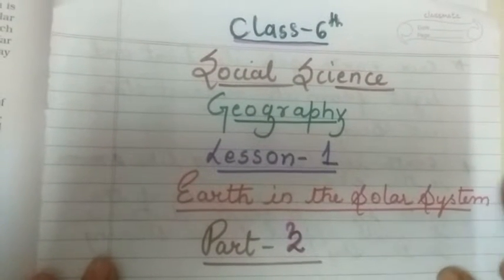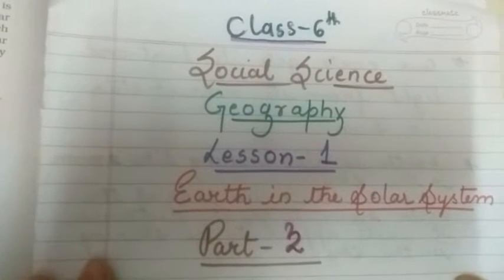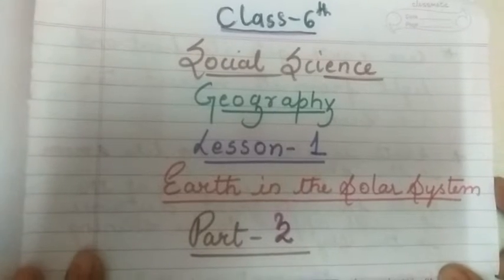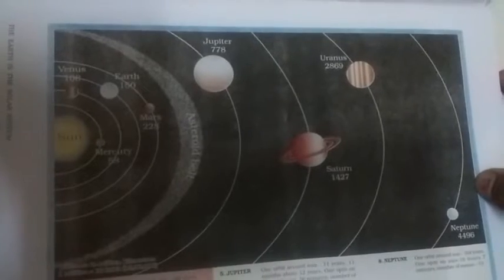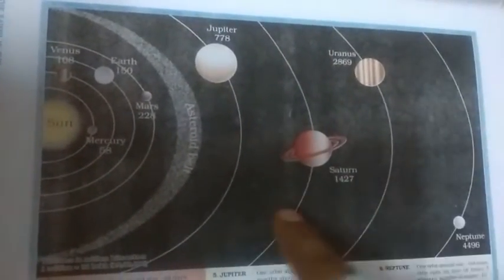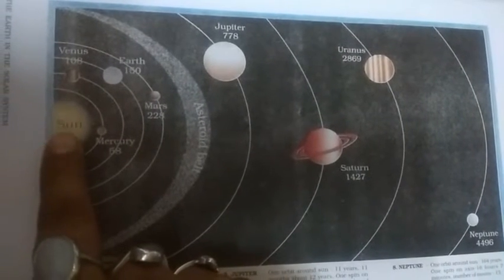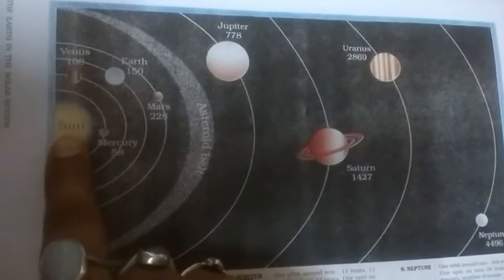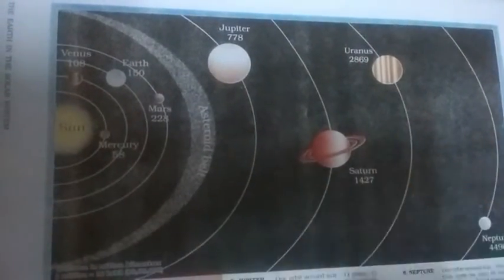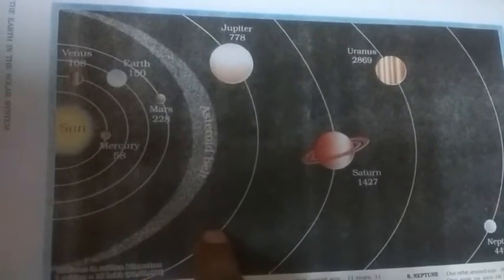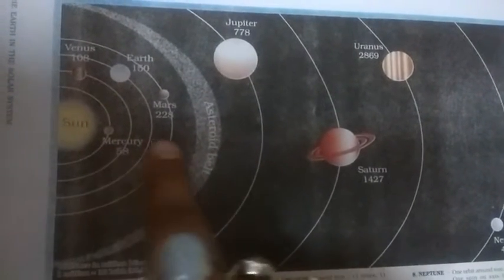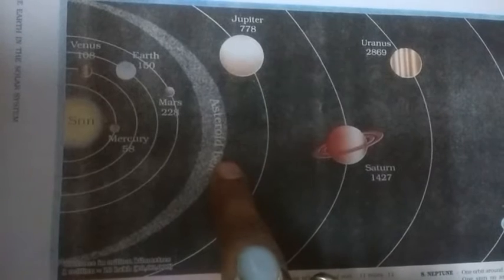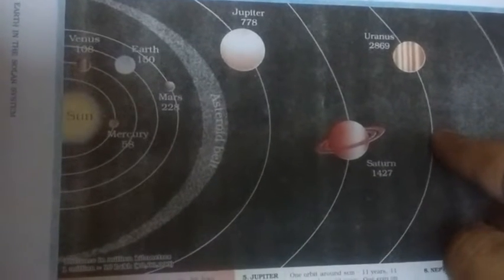Class 6 Social Science Geography, Lesson 1: Earth in the Solar System, Part 3. This is the diagram of our solar system. You can see the sun, which is a static body and a star, and the planets revolving around the sun. This is our solar system: the sun, 8 planets, and asteroids.